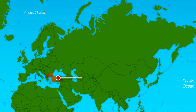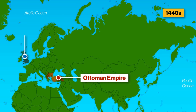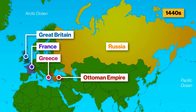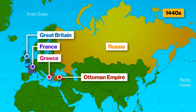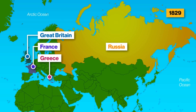And because Europe and the Ottomans had beef going all the way back to the 1400s, countries like Great Britain, France, and Russia were all too eager to support the Greeks. They jumped right into the drama, spreading anti-Ottoman propaganda across the continent. And when the Ottomans were defeated in 1829, it wasn't just a victory for the Greeks, but for the idea of nationalism as a whole.